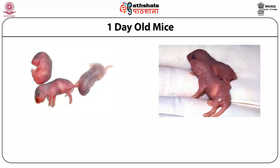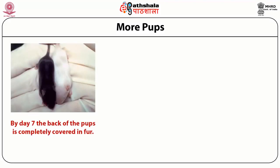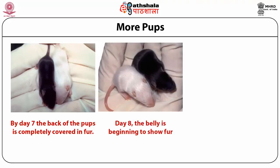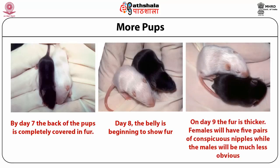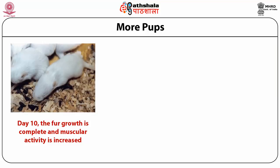Day-old pups are very red, and eyes and ears are completely closed. You can see a white area in the abdominal region called the milk spot, due to nursing with the mother. By day 7, fur is developing in both black (C57BL/6) and white (BALB/c) mice. By day 8 the stomach is enlarged and furs are well developed. On day 9 in females, pairs of nipples are visible. By day 10, fur and hair are complete and muscular activity increases.